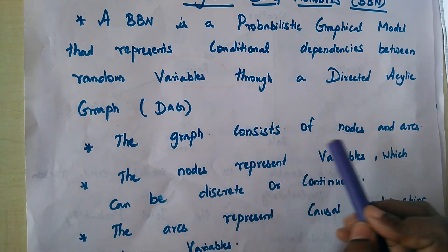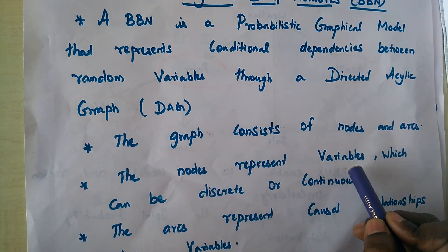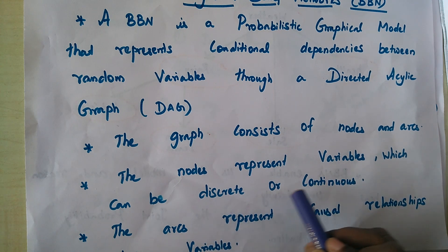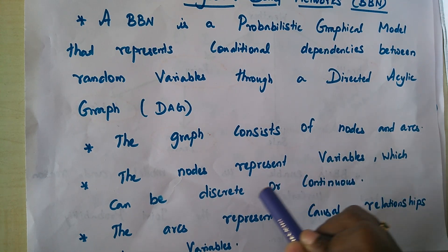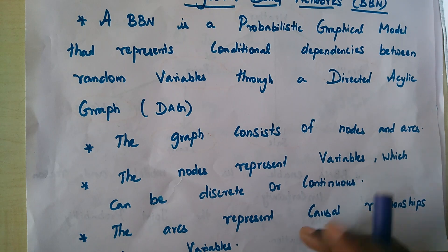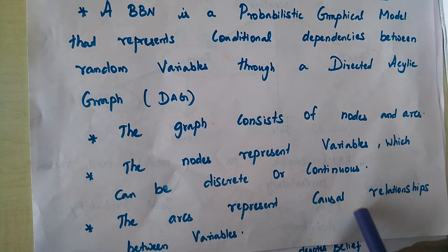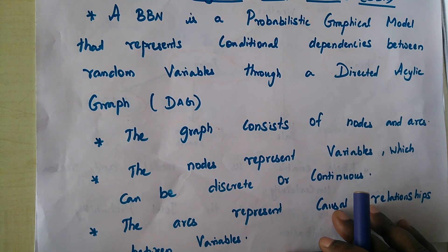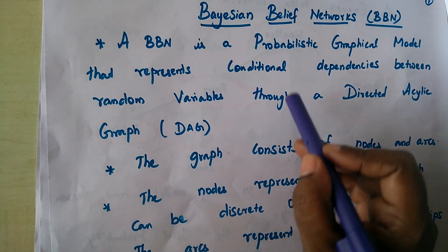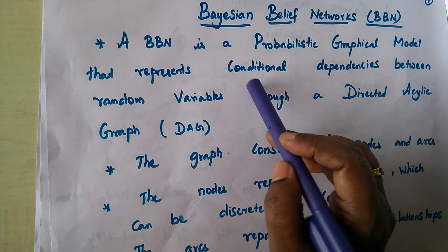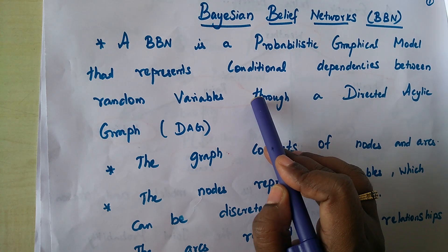A graph will have nodes and arcs. The nodes represent variables which can be discrete or continuous — a variable can take a discrete value or a continuous value. The arcs represent the causal relationship between the variables, which helps us explore the conditional dependencies between the random variables.